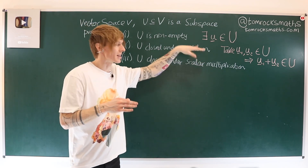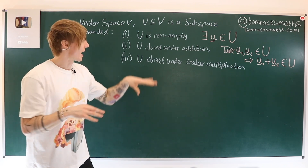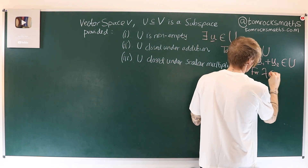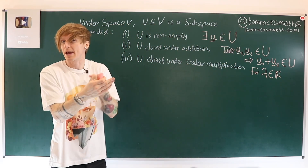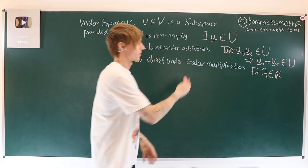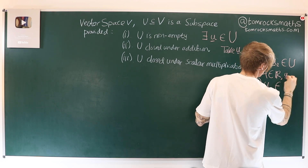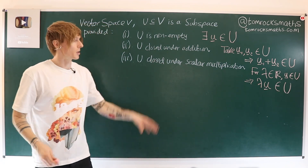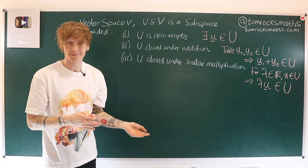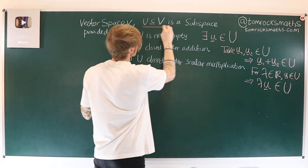This is similar to what we saw in the vector space axioms from the previous video. The third rule says: for a scalar lambda in the real numbers — though it could be a more general field — if lambda is real and u is in U, then lambda times u also belongs to U. If all three of these are satisfied, we can say that U is indeed a subspace.